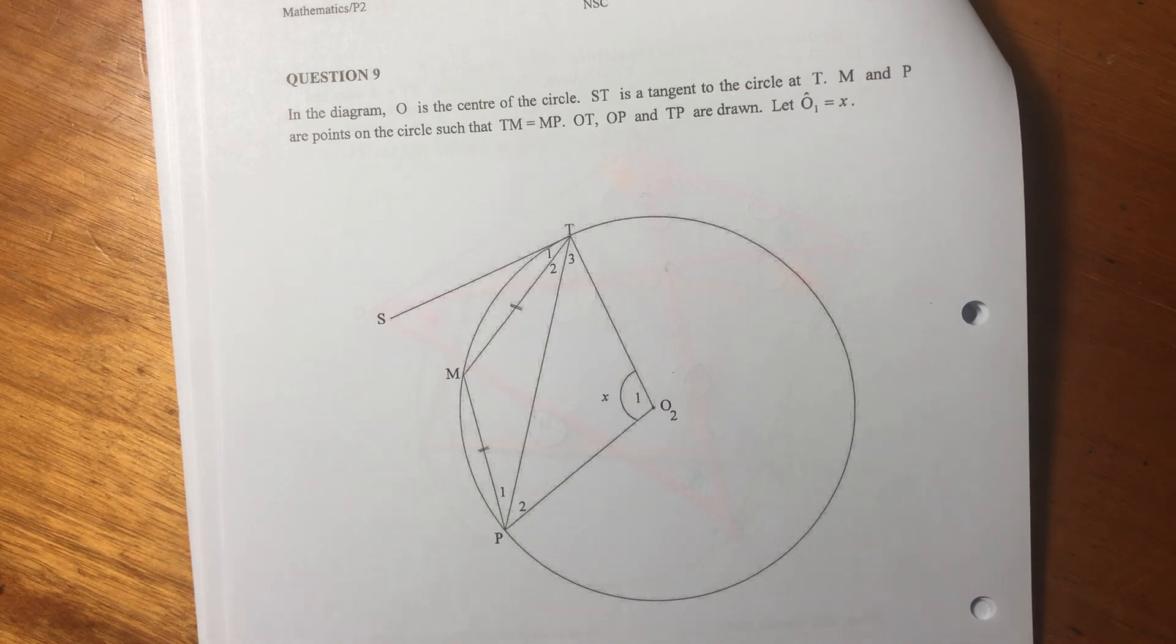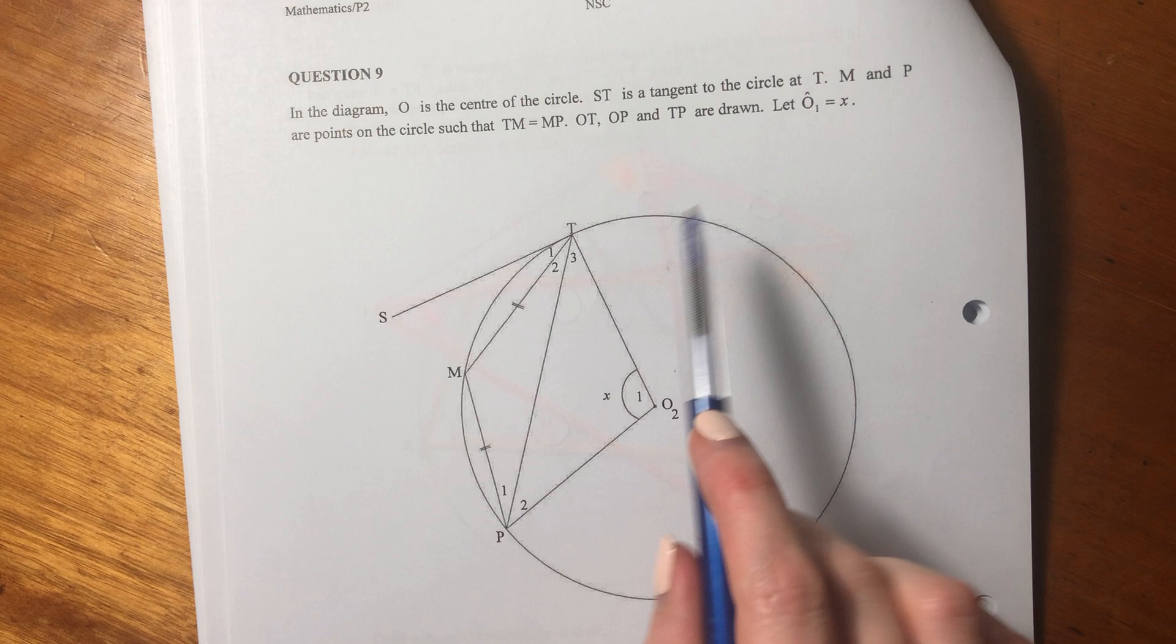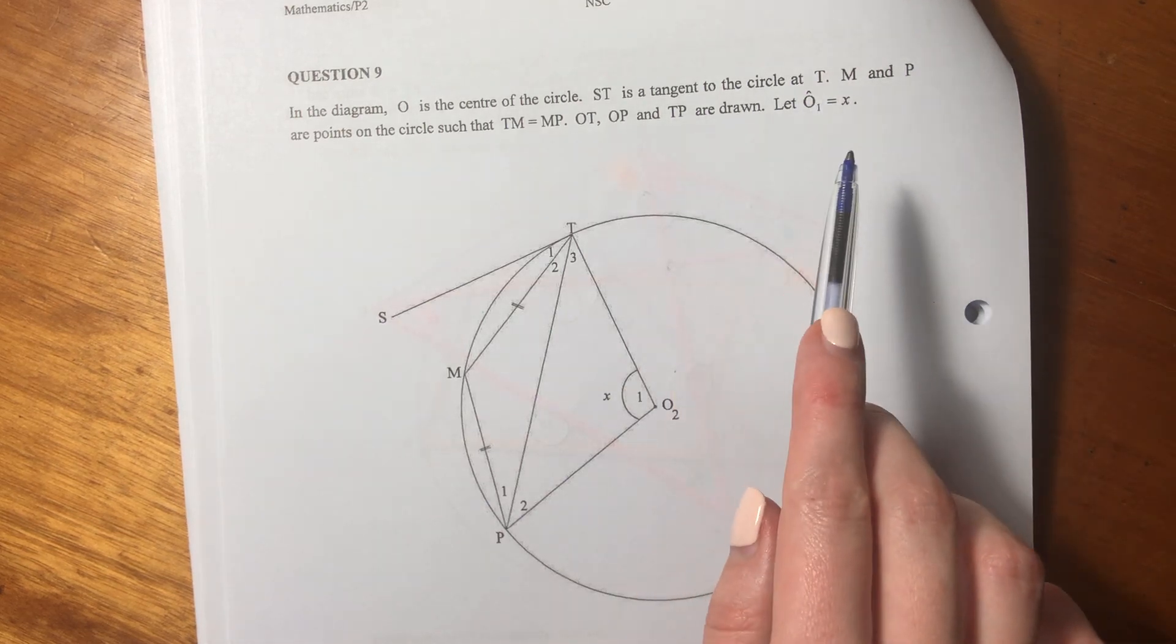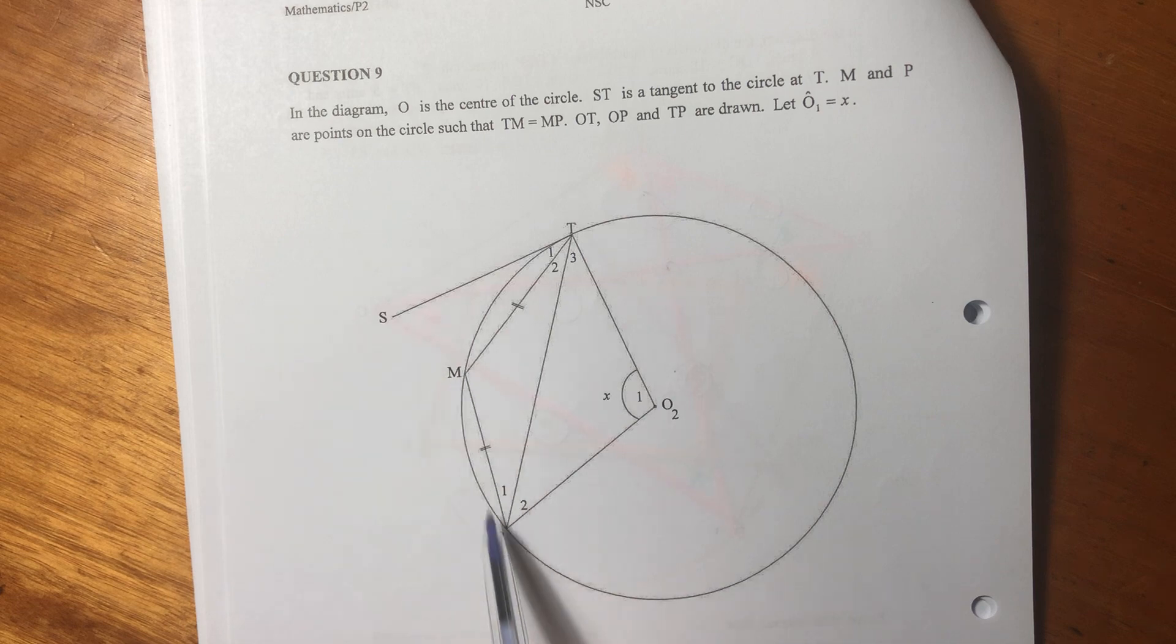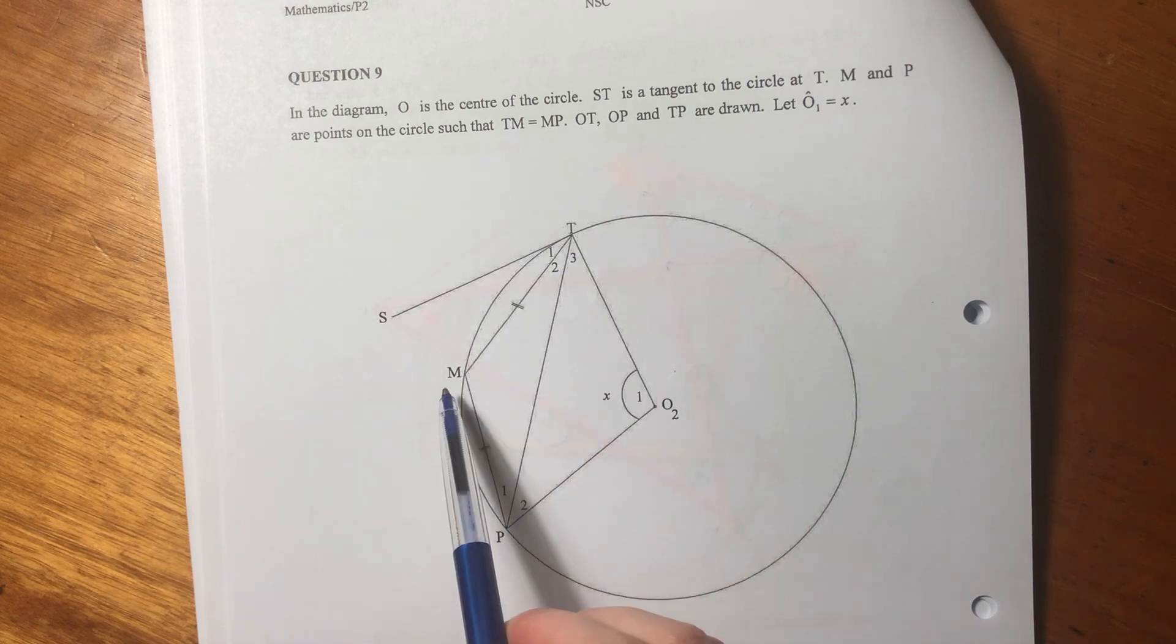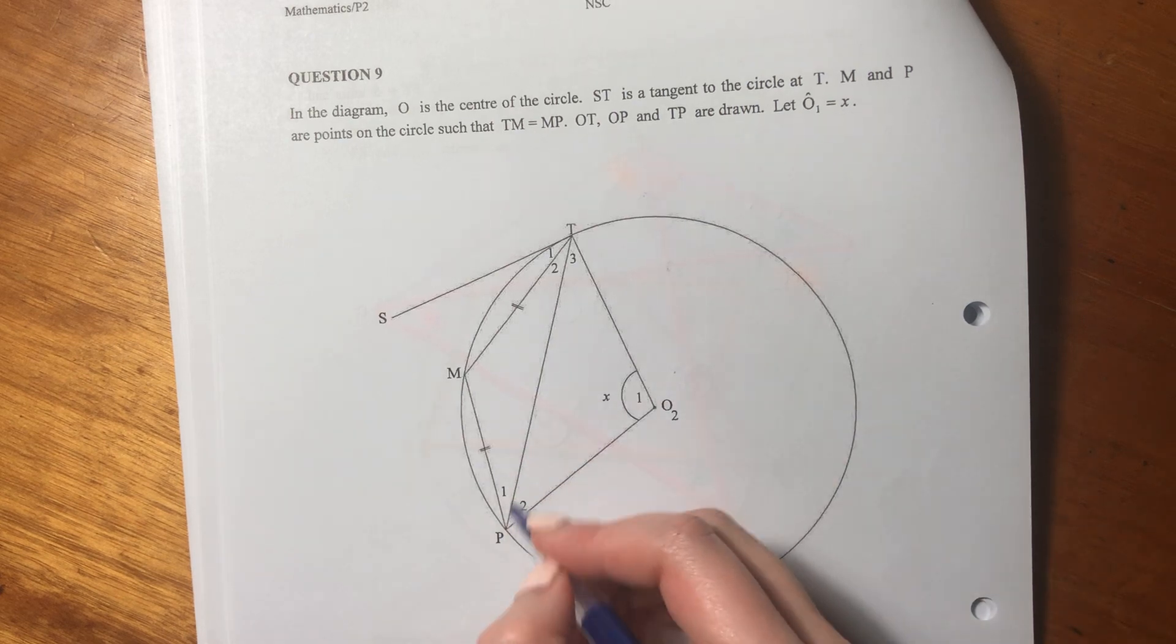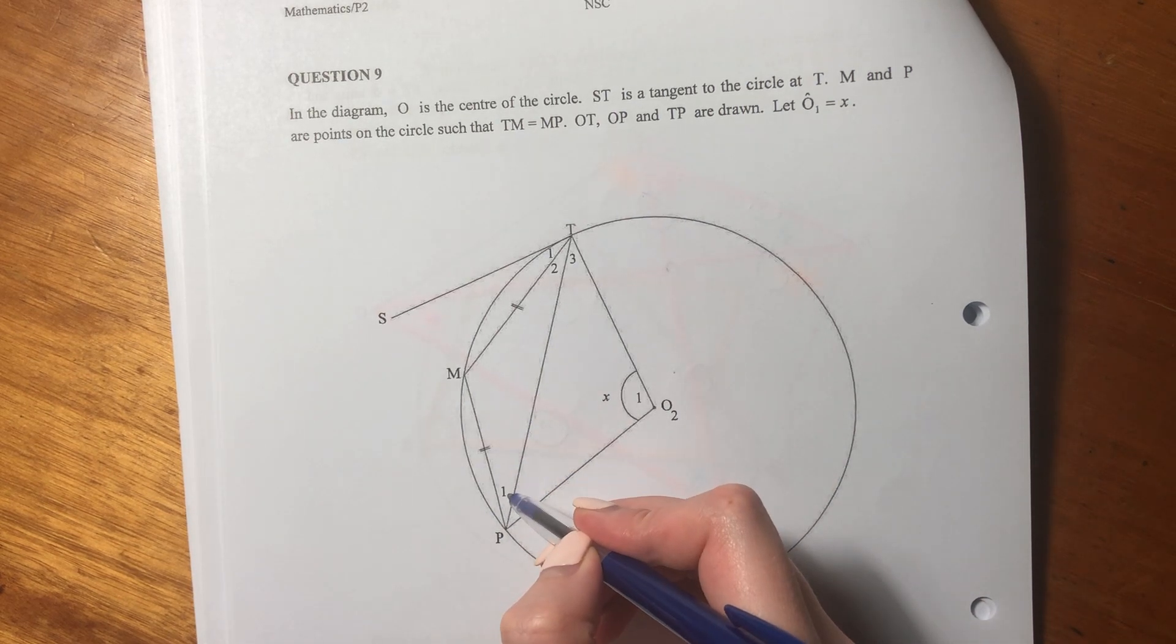Then it says ST is a tangent to the circle at T. M and P are points on the circle such that TM and MP equal each other. So it's basically telling us that this is an isosceles triangle. You should automatically think that - you have two equal sides, means that this angle is going to equal this angle.